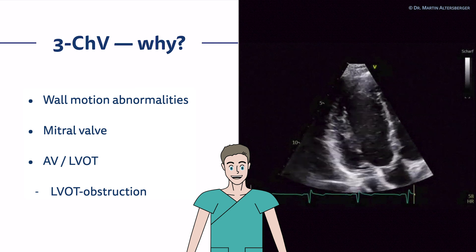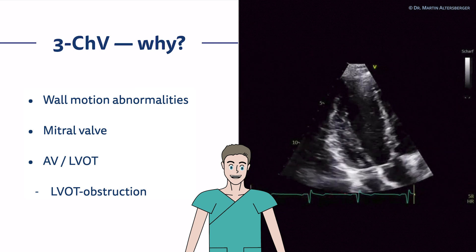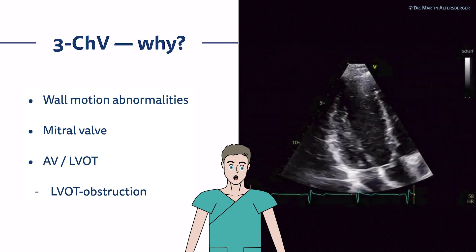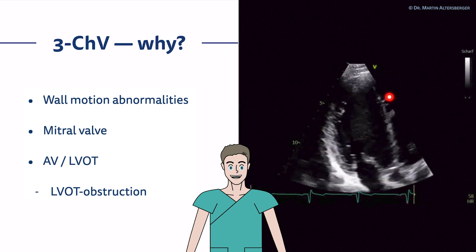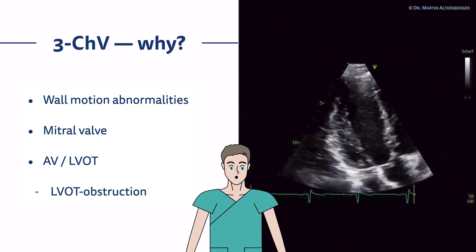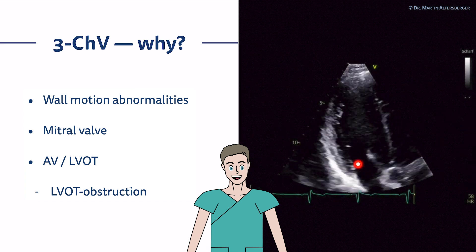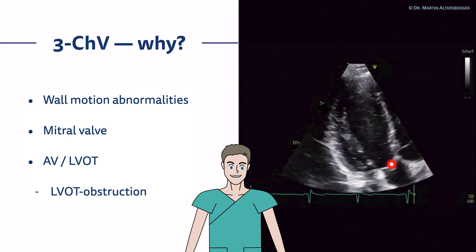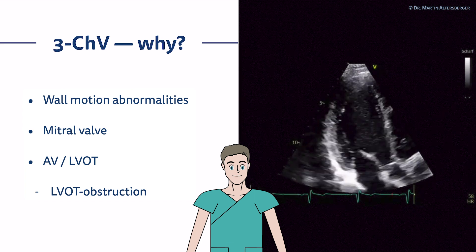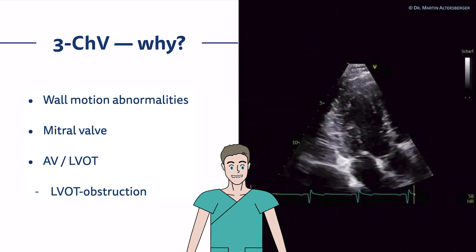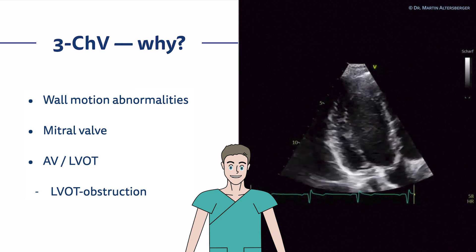Why the three-chamber view — why the apical long axis view? Wall motion abnormalities, thrombi, hypertrabeculatins, thickening of the left ventricular walls, strain imaging. You want to visualize the mitral valve, the aortic valve, the LVOT to see LVOT obstruction, aortic stenosis. So it is also an important view to have in each and every echocardiographic exam.